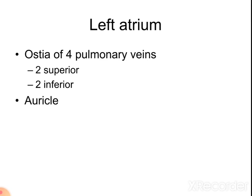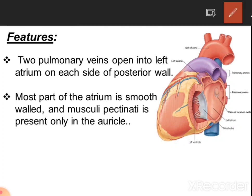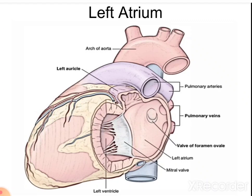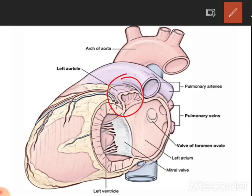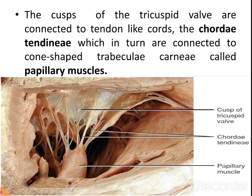The left atrium contains four pulmonary veins — two superior and two inferior — and the left auricle. Two pulmonary veins open into the left atrium on each side of the posterior wall. Most of the atrium has a smooth wall; pectinate muscles are present only in the left auricle. The left atrium is shown with the left auricle containing pectinate muscles, the opening of pulmonary veins, and the valve for the foramen ovale, known within the left atrium as the annulus ovalis.